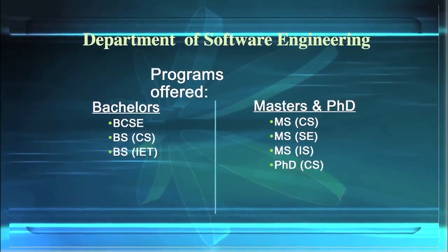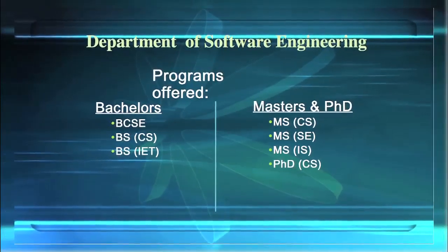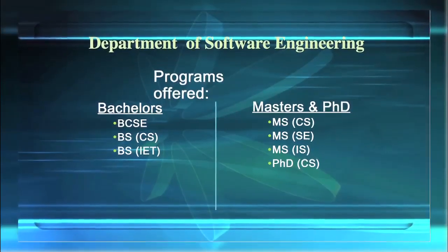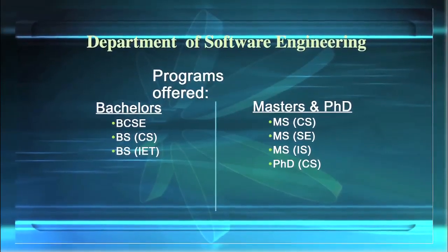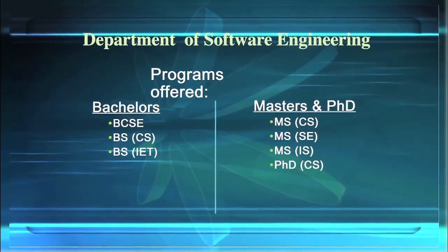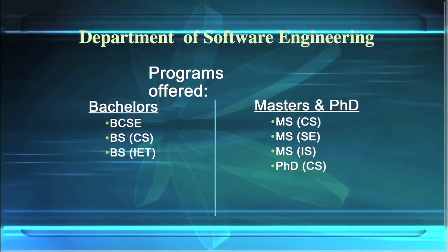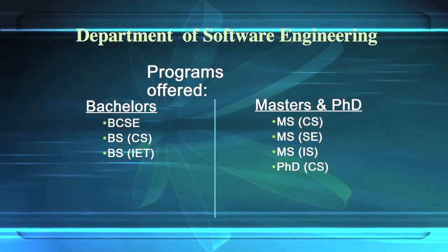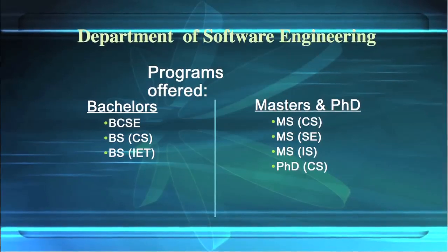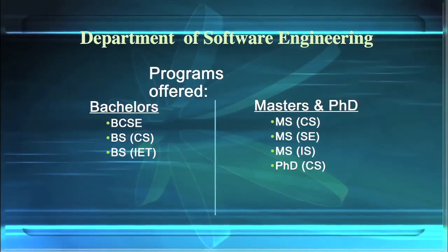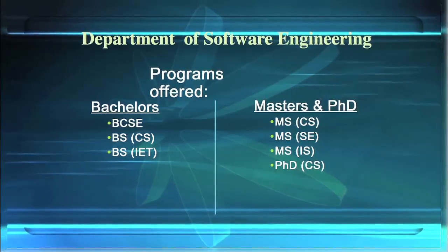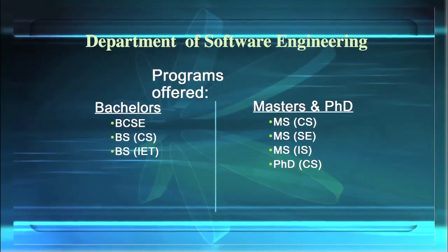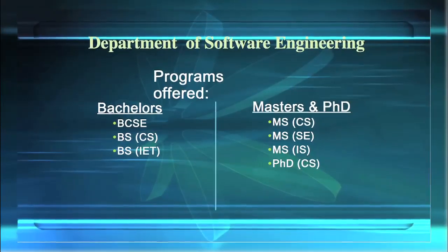The Department of Software Engineering offers bachelor, master, and PhD programs. There are three bachelor programs: Bachelor of Computer Software Engineering, Bachelor of Science in Computer Science, and Bachelor of Science in Information Engineering Technology. There are four postgraduate programs: Master in Computer Science, Master in Software Engineering, Master in Information Security, and PhD in Computer Science.